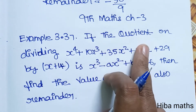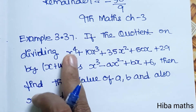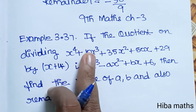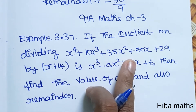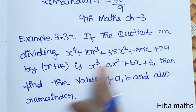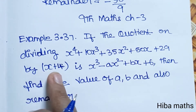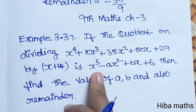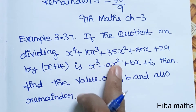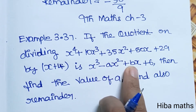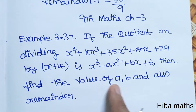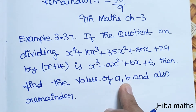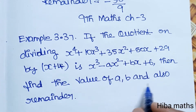If the quotient on dividing x⁴ + 10x³ + 35x² + 50x + 29 by x + 4 is x³ - ax² + bx + 6, then find the value of A, B, and also the remainder.